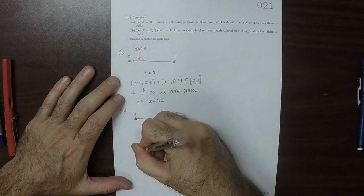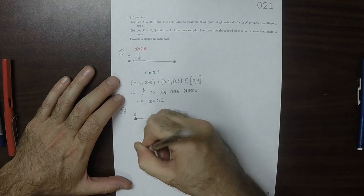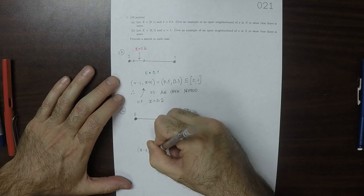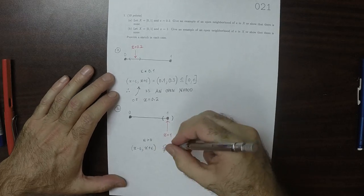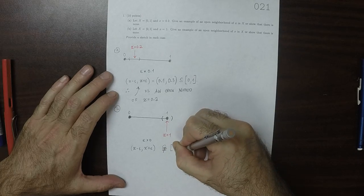And as a result, the set x minus epsilon to x plus epsilon will never be a subset of 0 to 1.